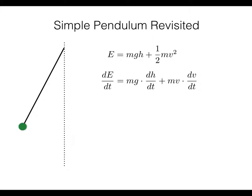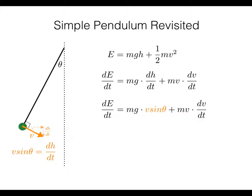We might be tempted to say that dh/dt is simply v, but we have to be careful. Looking at the pendulum diagram, v has components, and the component representing dh/dt is the vertical component of v. Since the pendulum angle is theta and we have a right angle, this small angle is also theta, so dh/dt equals v sine theta. Substituting into our equation and canceling velocities and masses, and recalling that dE/dt equals zero, we make these simplifications.